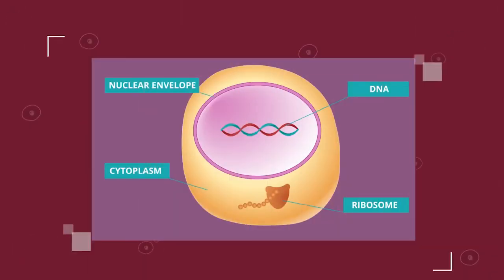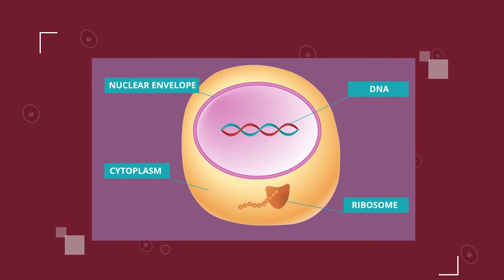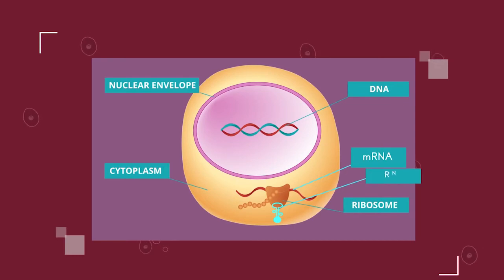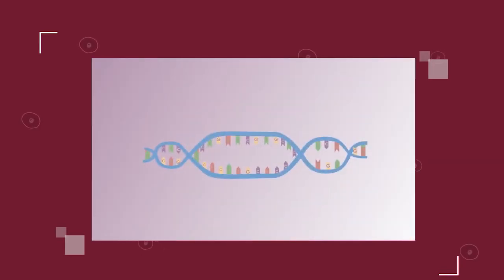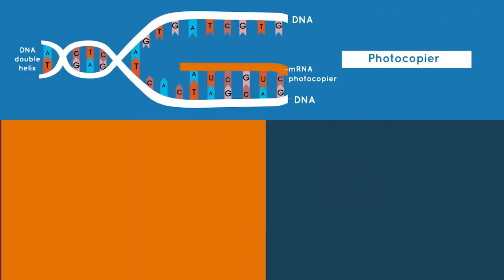RNA plays a big role in protein synthesis. There are two special types of RNA: messenger RNA, also known as mRNA, and transfer RNA, also known as tRNA. mRNA is synthesized inside the nucleus, copied from the DNA code, and tRNA is found in the cytoplasm.